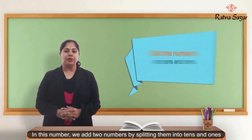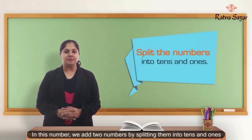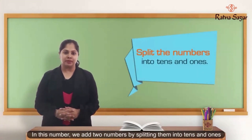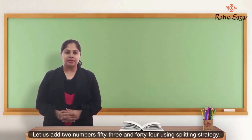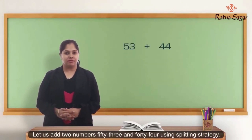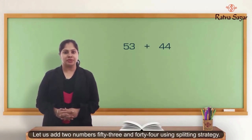We add two numbers by splitting them into tens and ones. Let us add two numbers, 53 and 44, using the splitting strategy.